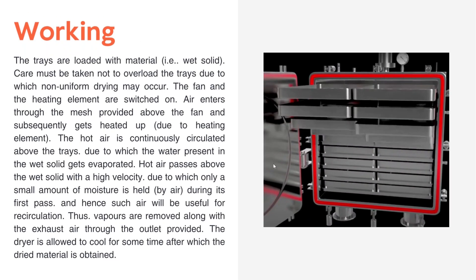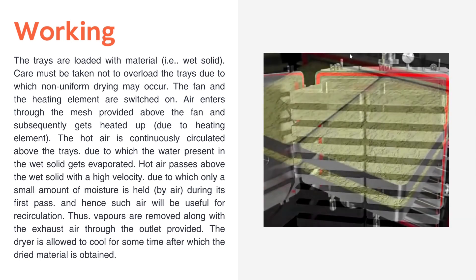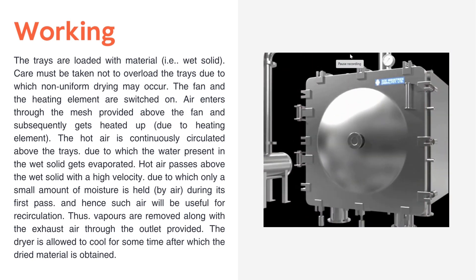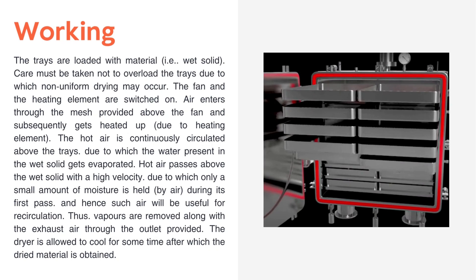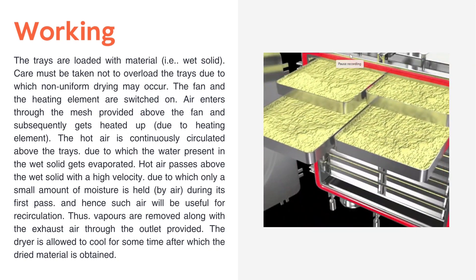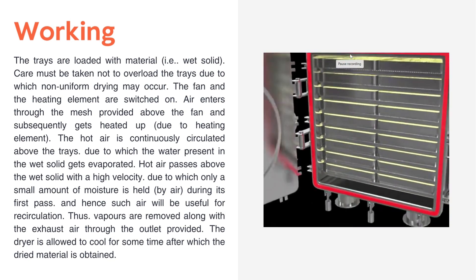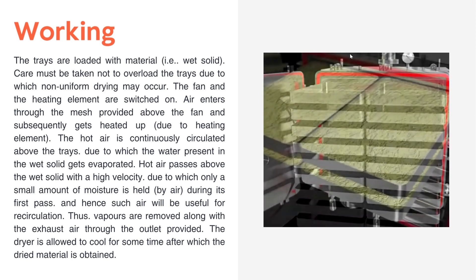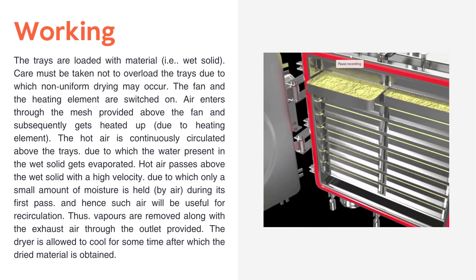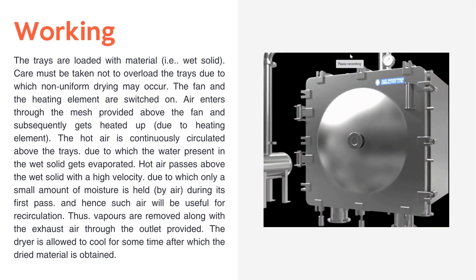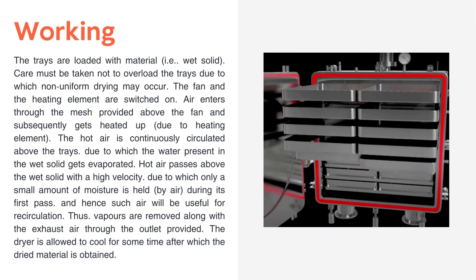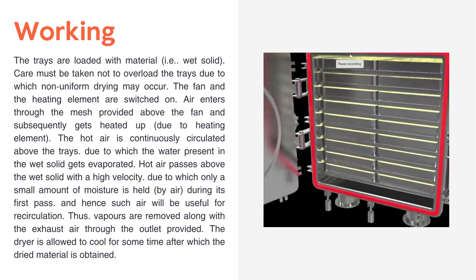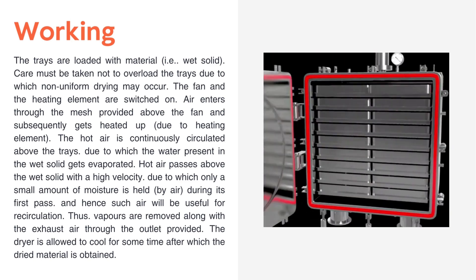In the working of the tray dryer, firstly the trays are filled with wet material that has to be dried. While loading, we should not overload the trays. The fan and heat source are started; air enters the chamber through the mesh on top of the fan and gets heated through the heating source. Simultaneously, hot air is circulated over the trays containing wet solid, causing the moisture to evaporate.